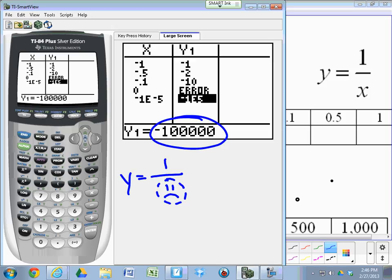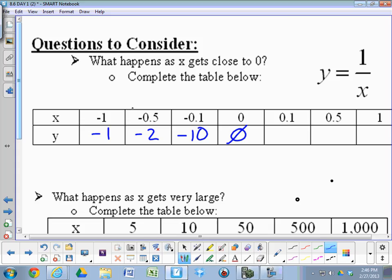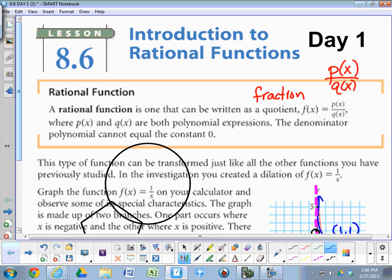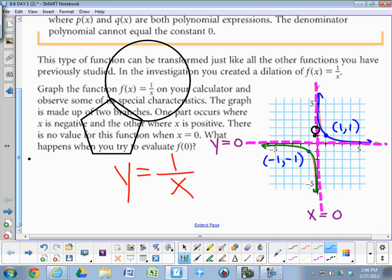So what's happening here is this part of the graph is what's happening. This part of your parent function is what's happening right now. As the x's get closer to 0 from the left, the y's drop down into the big-time negatives.